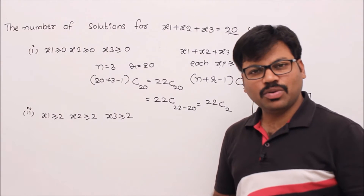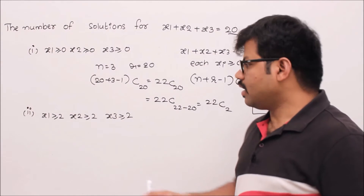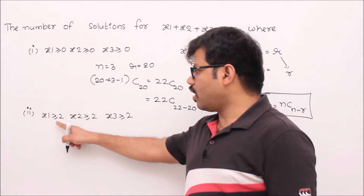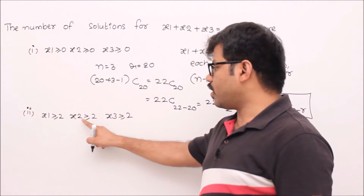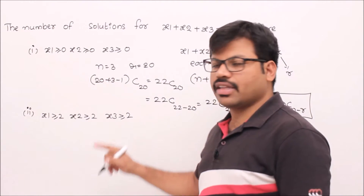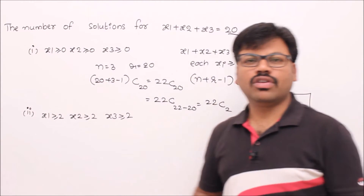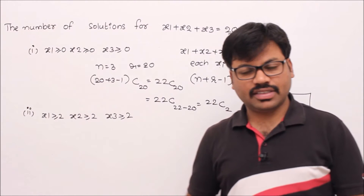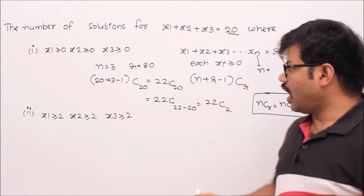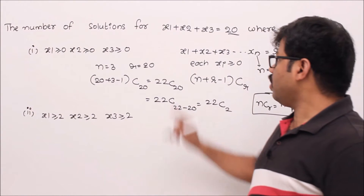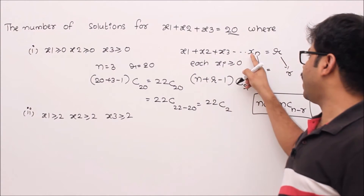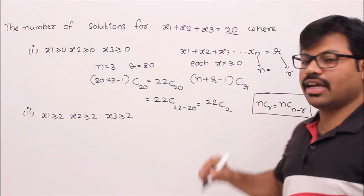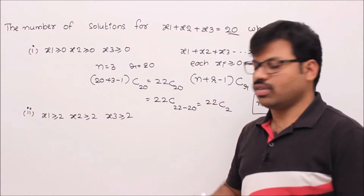Let's see condition number 2. Here we have x1 greater than or equal to 2, x2 greater than or equal to 2, x3 greater than or equal to 2. We don't have a direct formula for that — we only have the formula for the case where each xi is greater than or equal to 0. So how do we solve this problem?